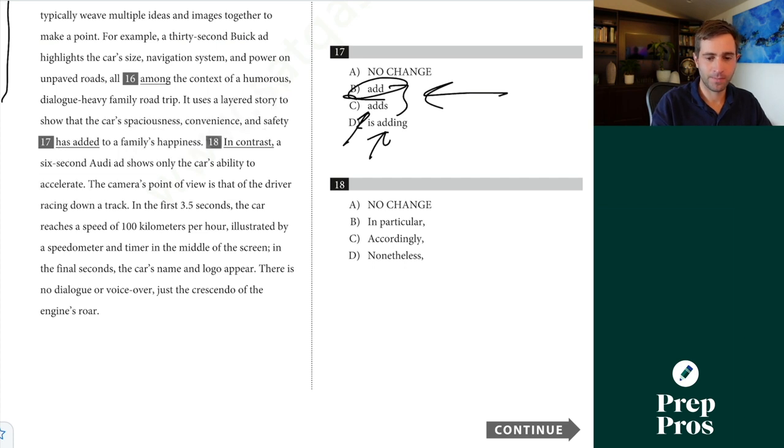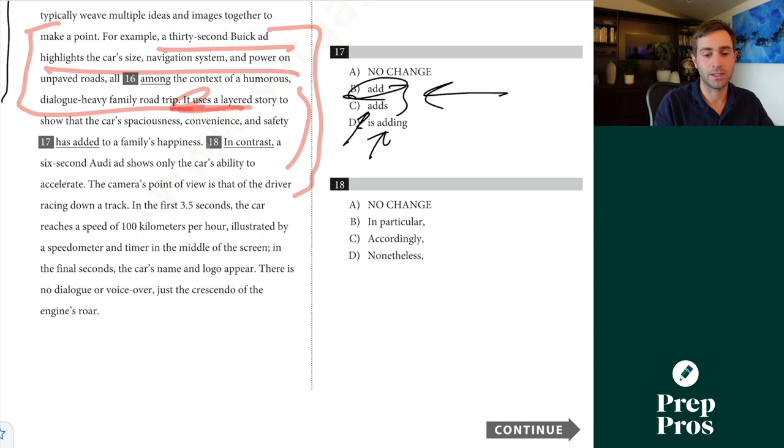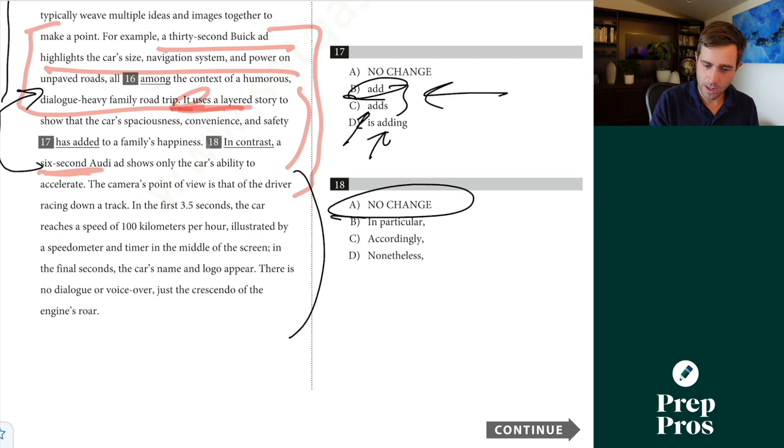So transition question once again. So uses a layered story to show the car's spaciousness, convenience, safety, blank, add to a family's happiness, blank. So I want to go back for a little more context here. I'm pretty sure I remember what this sentence was talking about, but the it I want to understand for this question. For example, a 30-second Buick ad highlights the car's size, navigation, and power on unpaved roads. All within the context of this, we're talking about it's using a story. Blank, a six-second ad shows only the ability to accelerate. Well, once we pick up the context back here, it's way easier to see that we're highlighting a contrast. We talked about this longer ad giving all of these details in this background and this layered story. Now the shorter one only shows the ability to accelerate. That's going to show us a contrast here.